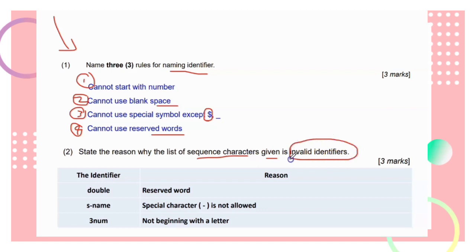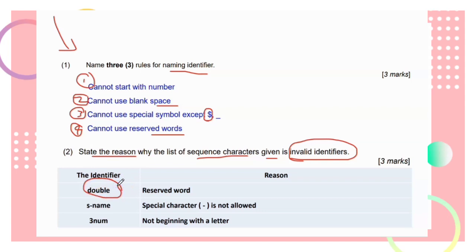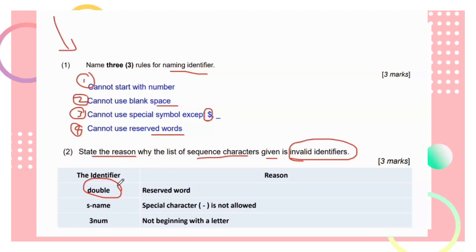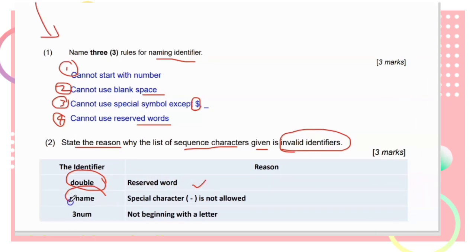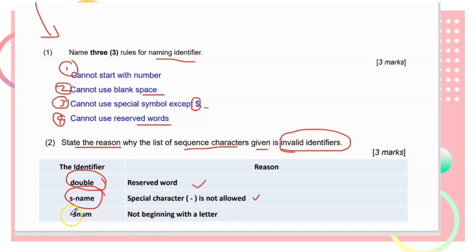Now, the reason why a list of sequence characters are invalid identifiers: 'double' cannot be a valid identifier because it is a reserved word. 'as-name' is invalid because the special character dash is not allowed. '3num' is also invalid because it does not begin with a letter.